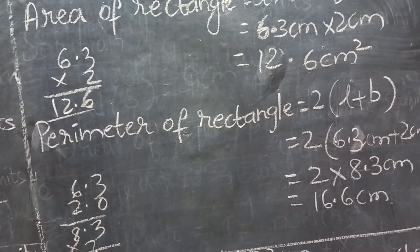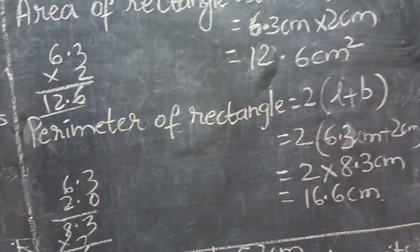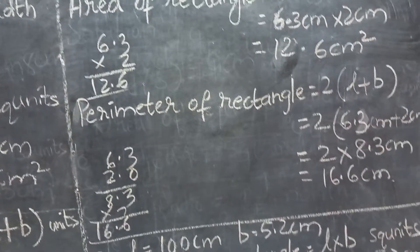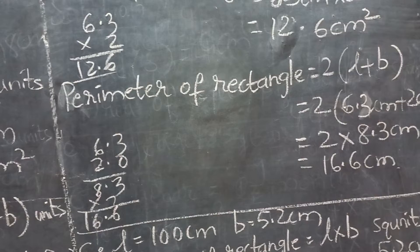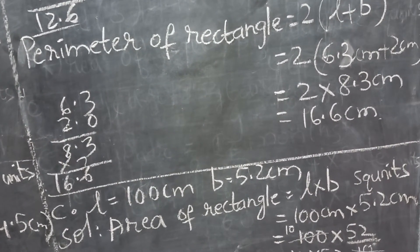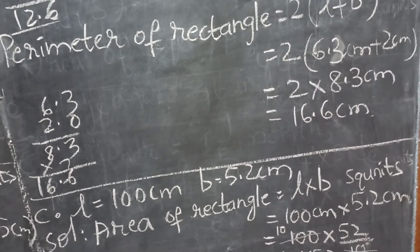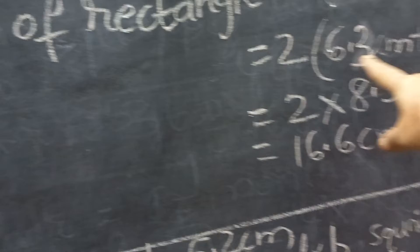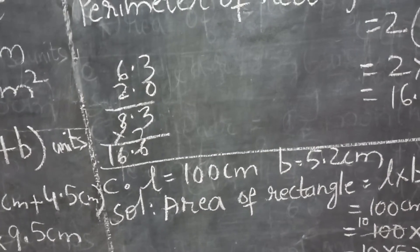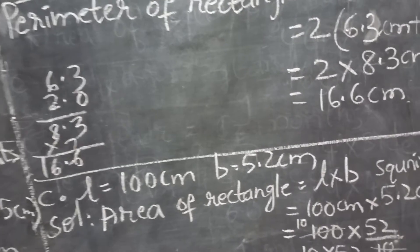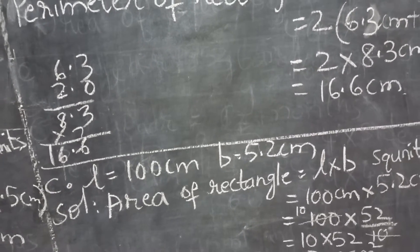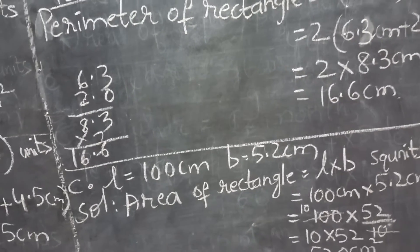It is compulsory to write units in areas and perimeters. If you don't write it, we cannot consider it correct — it is part of the answer. Perimeter of the rectangle is two into L plus B. Substitute: L is 6.3 centimeters plus B is 2 centimeters. 6.3 plus 2.0 is 8.3. Multiply: two threes are six, two eights are sixteen — so perimeter is 16.6 centimeters.